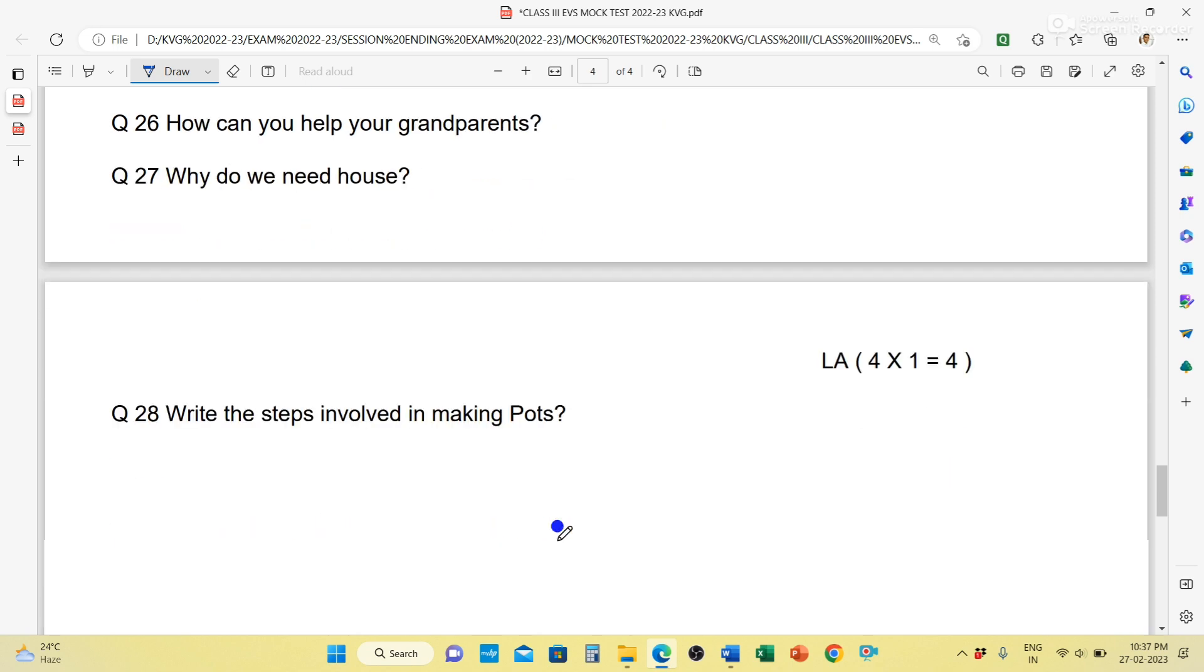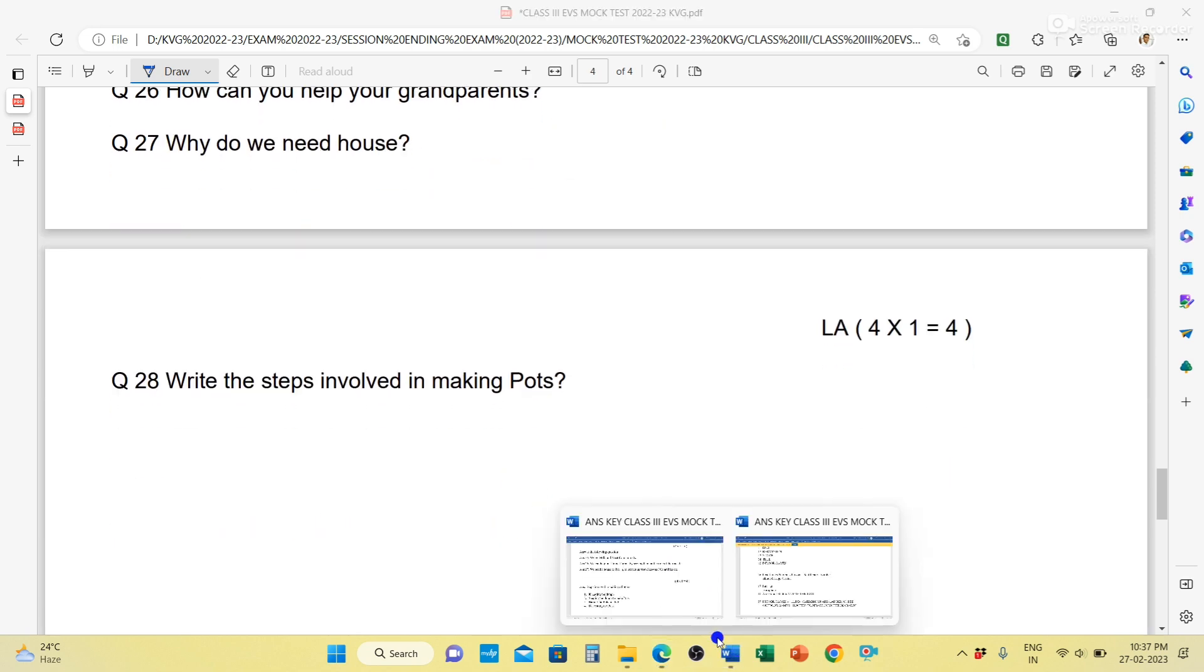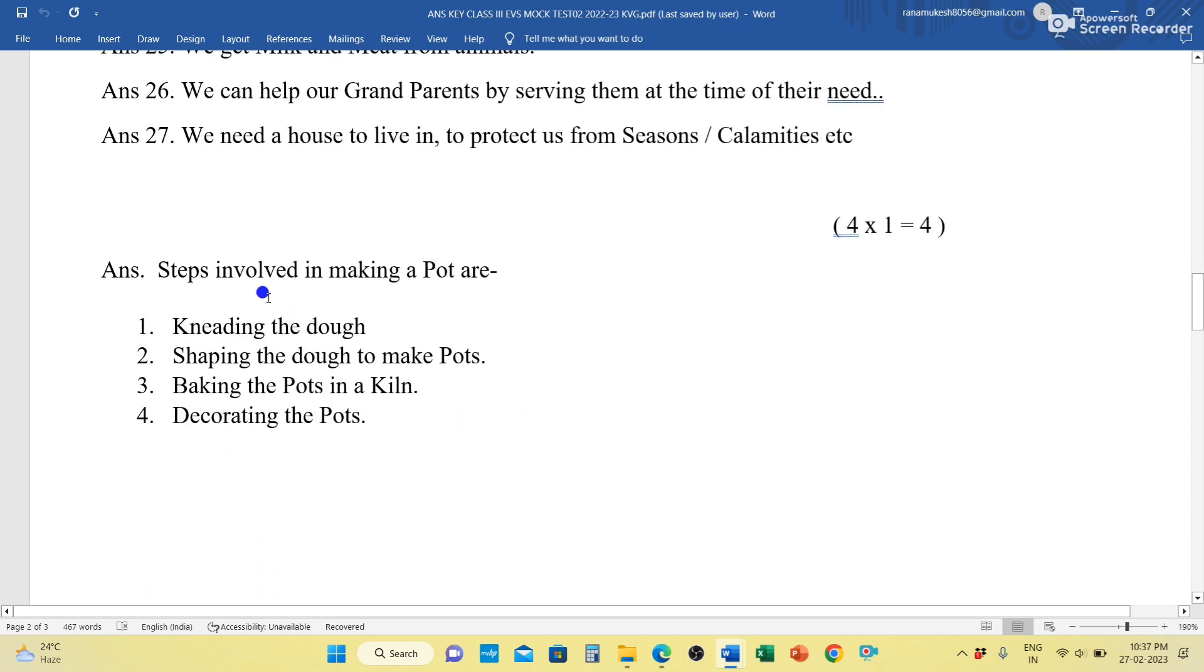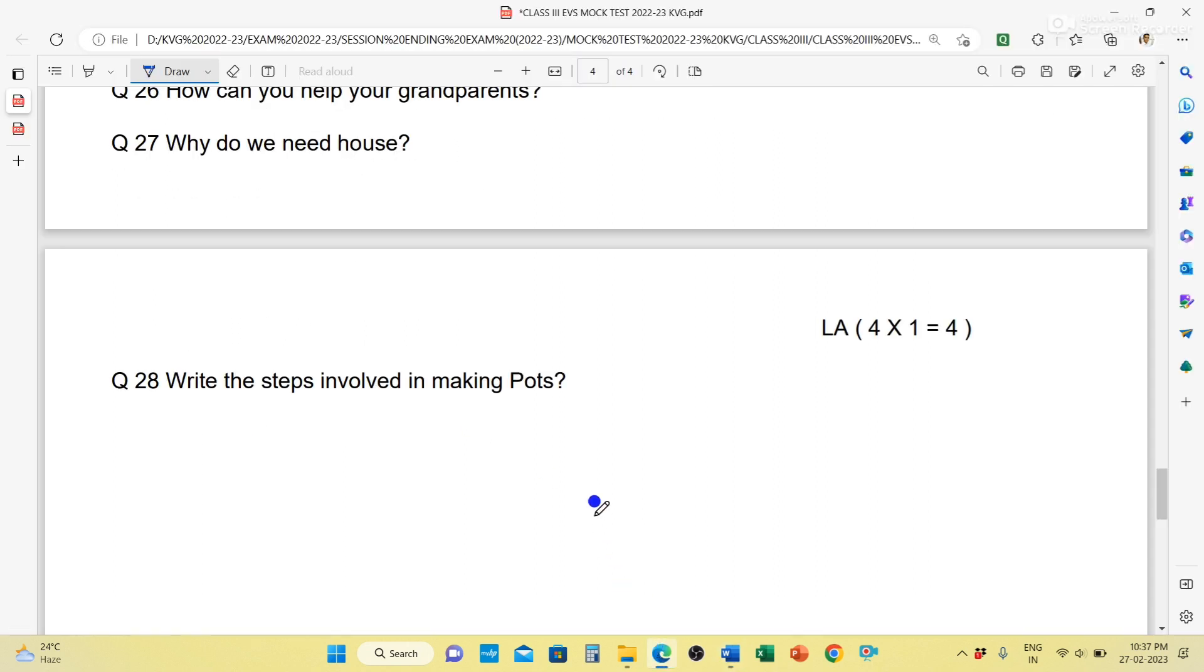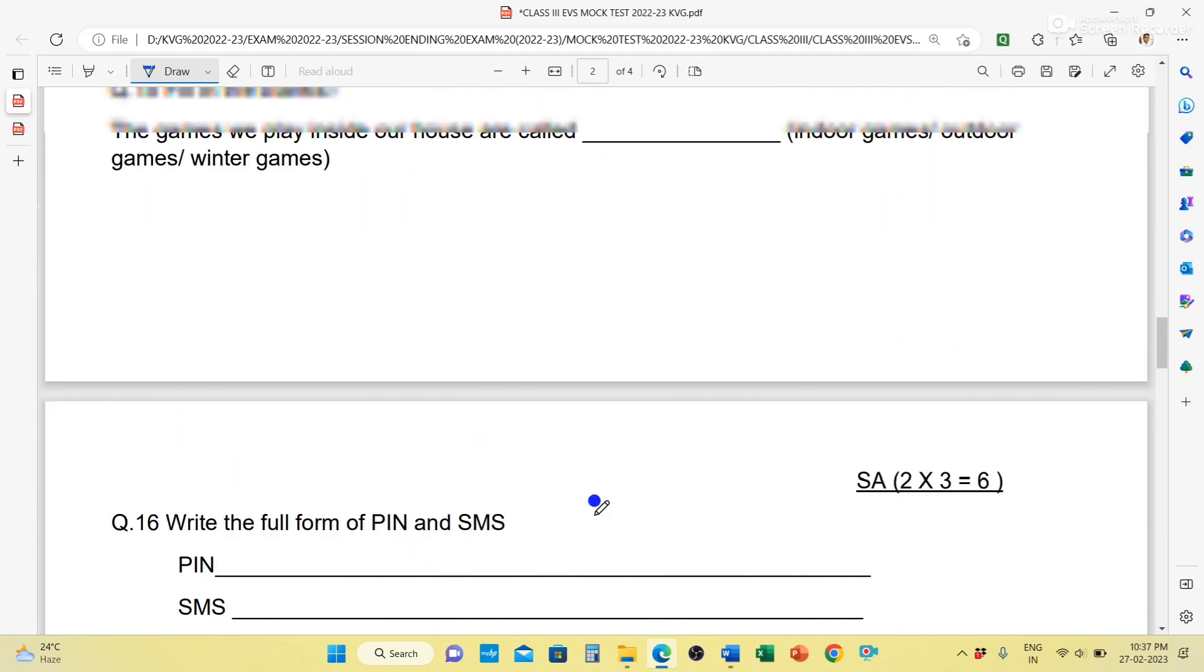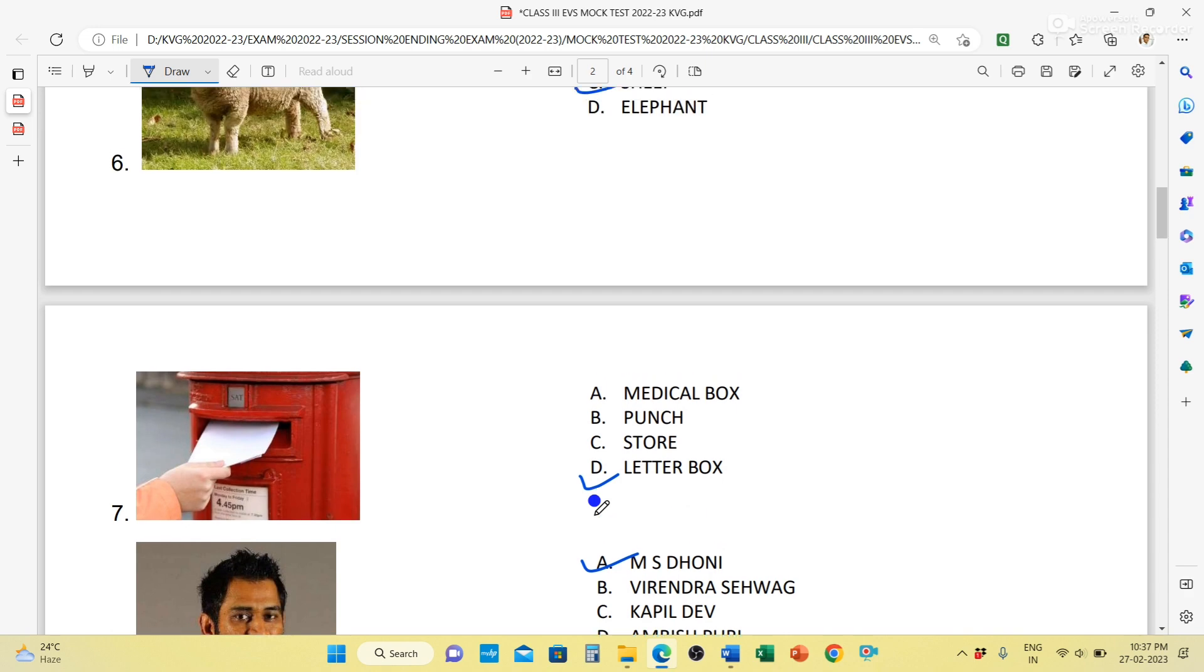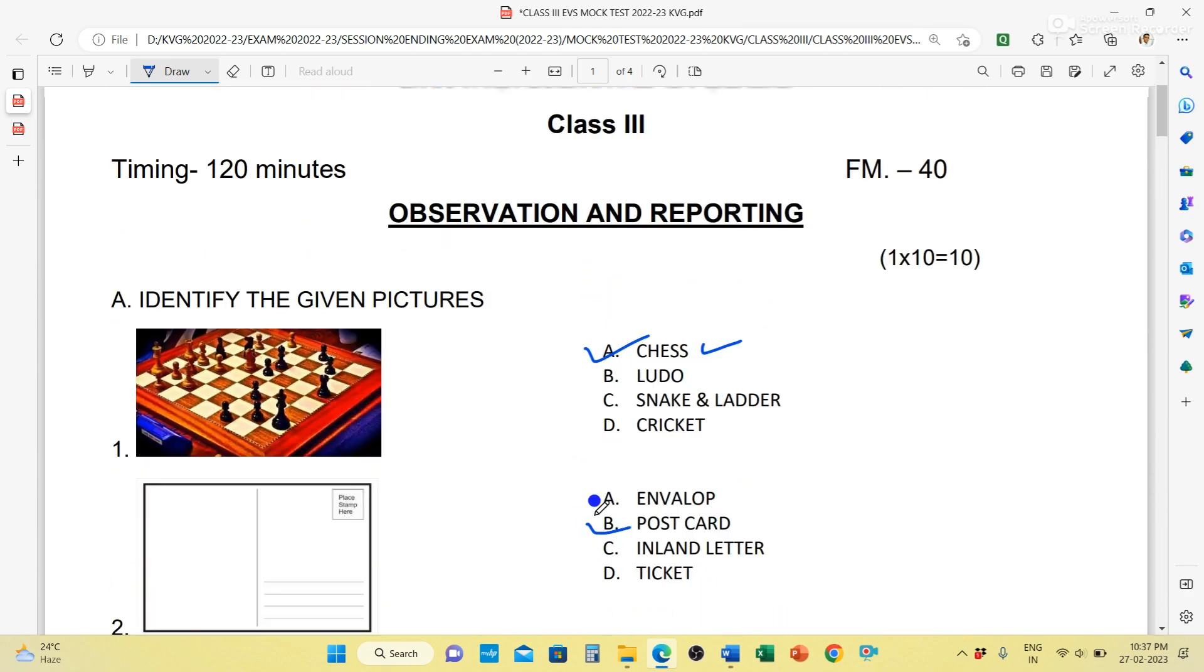Write the steps involved in making pots. How do we make pots? Steps involved in making a pot. This is for four marks. We can write: First, we have to knead the dough. Then we have to bake the pots in a kiln. Then we have to decorate the pot. Kneading the dough, shaping the dough to make pots, baking the pots in a kiln, and decorating the pots. So this was your sample paper for your session ending examination. I think you are preparing well. I wish you all the best for your upcoming exam. Prepare well. Thank you.